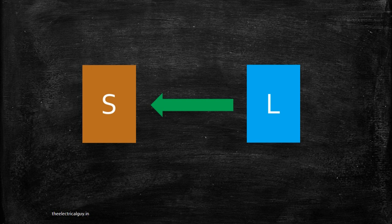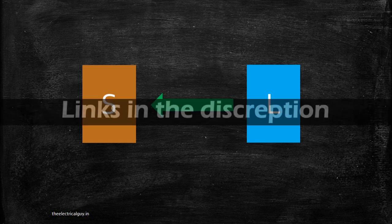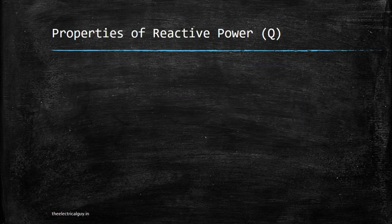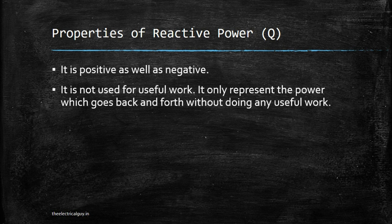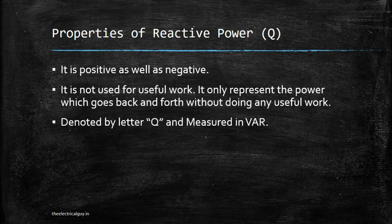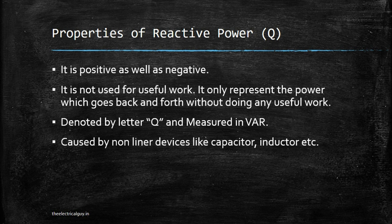By the way, if you want to have details about why current leads voltage in a capacitor and why current lags voltage in an inductor, you can watch my videos on that — you will find the links in the description. Now let's see the properties of reactive power. It is positive as well as negative. It is not used for useful work. It only represents the power which goes back and forth without doing any useful work. It is denoted by the letter Q and measured in VAR, that is volt ampere reactive, caused by non-linear devices like capacitor, inductor, etc.